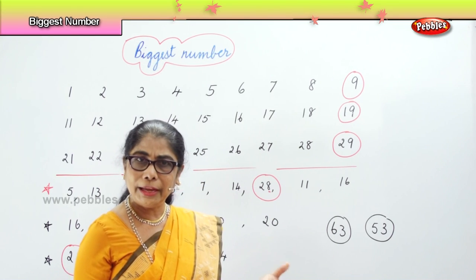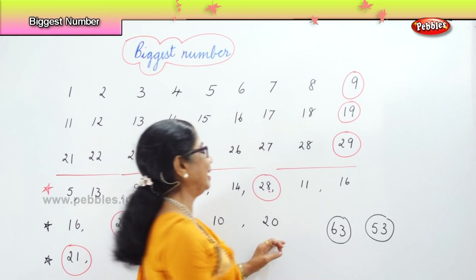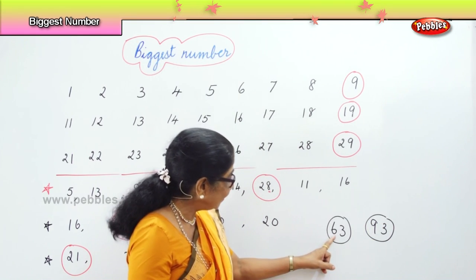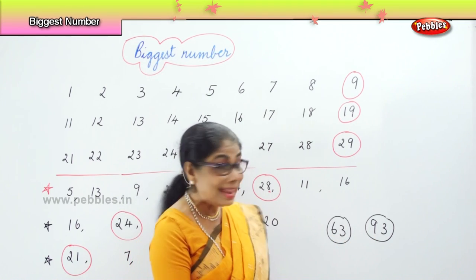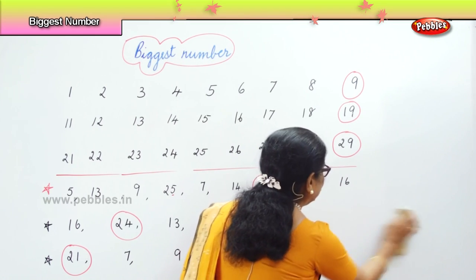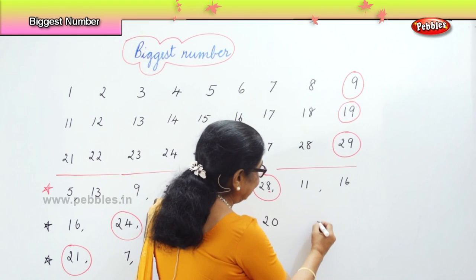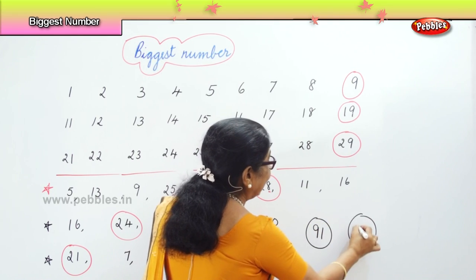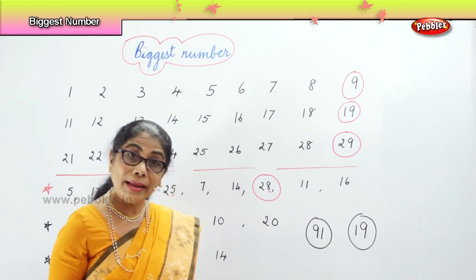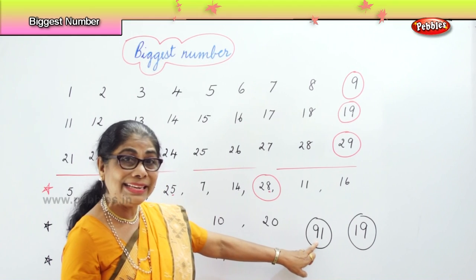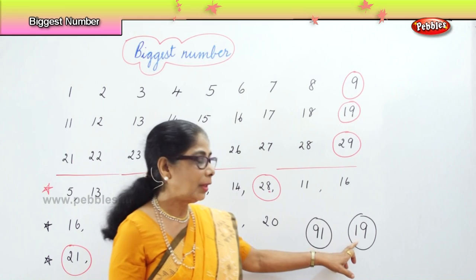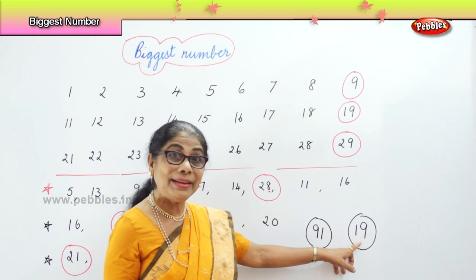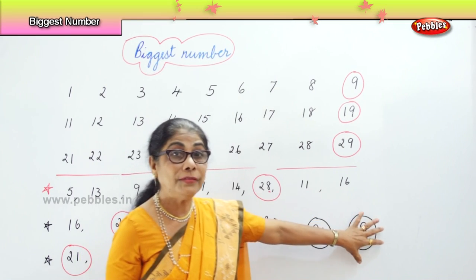If I say sixty-three and fifty-three, which is the biggest? The first number is six — sixty. Now suppose I say ninety-three: which is bigger, sixty-three or ninety-three? The first number is six here and nine here. So ninety-three is bigger. If I say ninety-one and nineteen — one and nine versus nine and one — the first number of ninety-one is nine, of nineteen is one. So ninety-one is the biggest of the two.